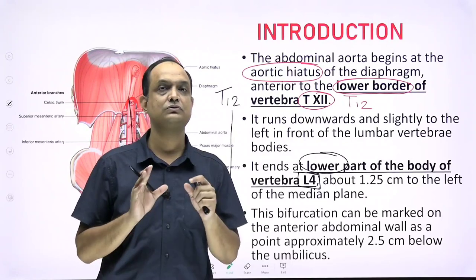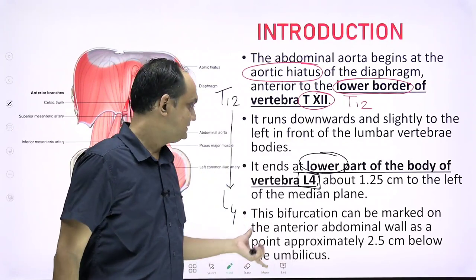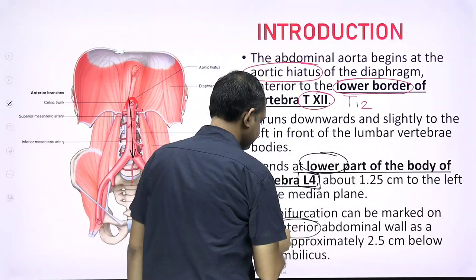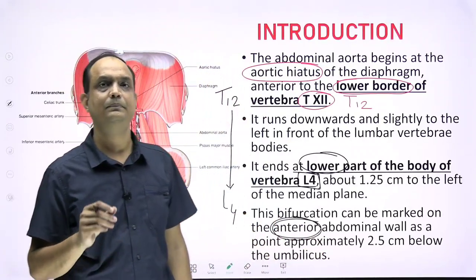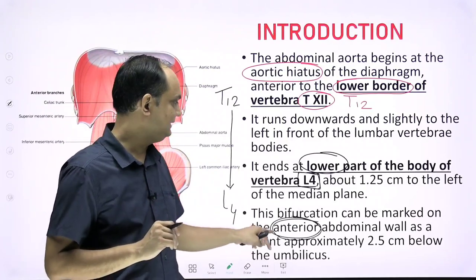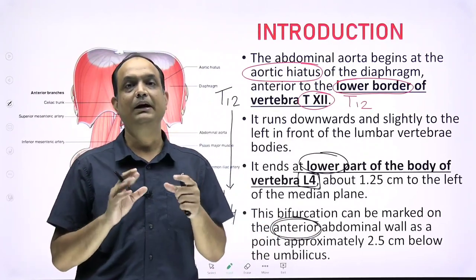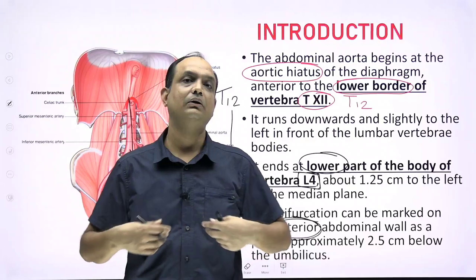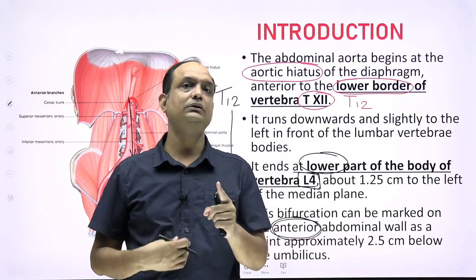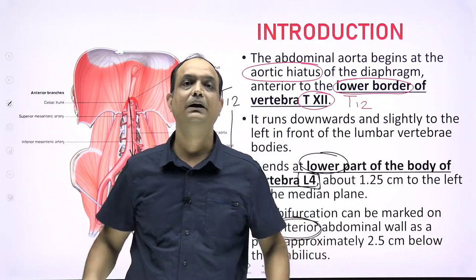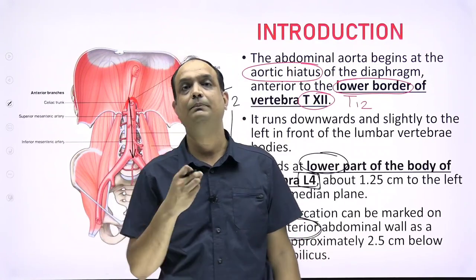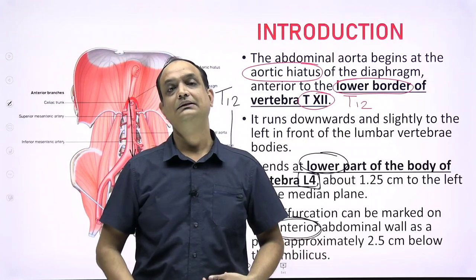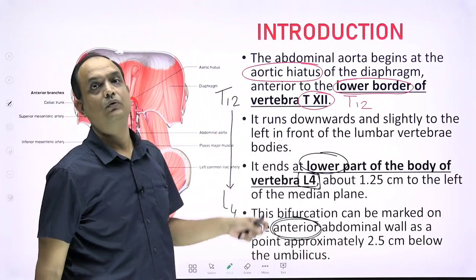Students must keep in mind that the 2.5 cm below the umbilicus refers to surface marking. A common confusion is: if the aorta is on the posterior wall, why do we mark it anteriorly? Whenever we do surface marking, we assume you know the aorta is on the posterior side. The bifurcation point 2.5 cm below the umbilicus corresponds to the L4 vertebra.